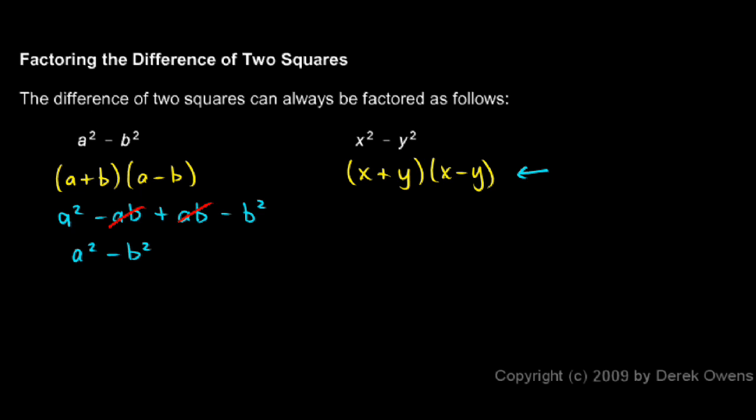The same thing will happen over here. If we do a FOIL, we get an x squared. Then from the outer, we have a minus xy. And then from the inner, we have a plus xy. And we always end up with those two canceling out when we have this pattern. And then the last two terms here, the y and the minus y, multiply to give us a minus y squared. And then after those two middle terms have canceled out, we're just left with x squared minus y squared. So once again, the two factors multiply to give us our original expression.